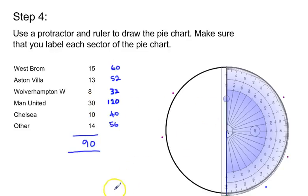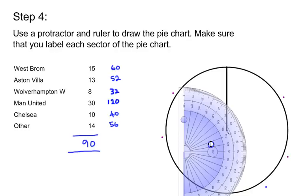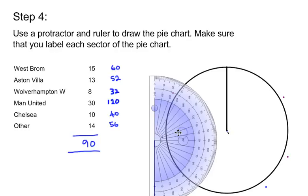For this you're going to need a protractor and a ruler. In a GCSE question, the circle and the line are going to have been drawn for you already. So first thing to do, take your protractor.